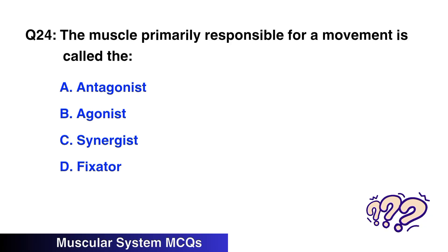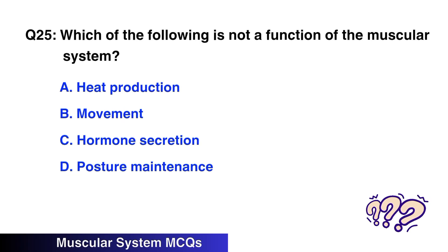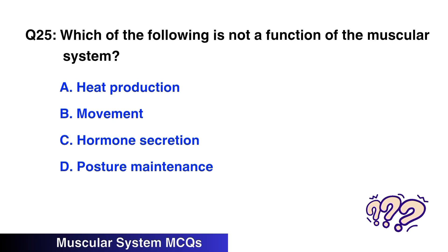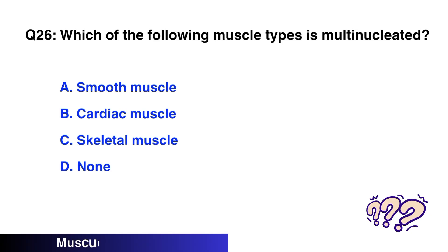Question No. 24: The muscle primarily responsible for a movement is called — the right option is B: Agonist. Question No. 25: Which of the following is not a function of the muscular system? The right option is C: Hormone secretion.